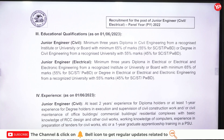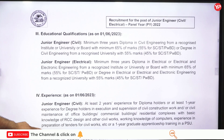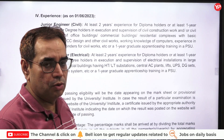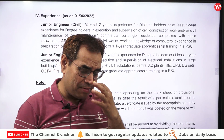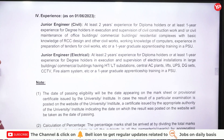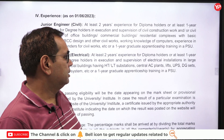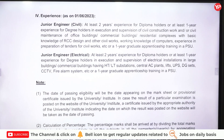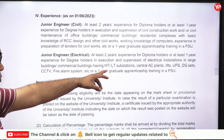Experience is also required for this job. For Junior Engineer Civil: diploma holders must have at least two years of experience in civil/construction-related work, while B.Tech degree holders require one year of apprenticeship in a PSU. Similarly for Junior Engineer Electrical: diploma holders need two years of experience, and B.Tech holders need one year of experience in execution and supervision of electrical installations in large or commercial buildings.